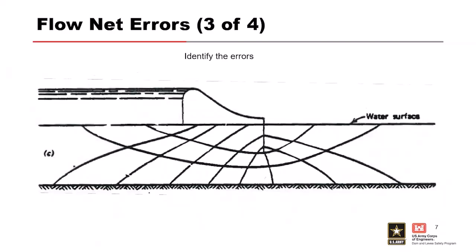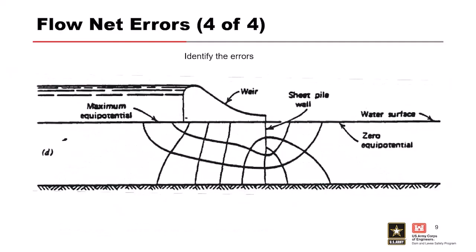How about this one? Assuming this is an isotropic soil media. The flow lines — they're not meeting at right angles. Yep, okay, thanks Lydia — that's exactly it. They're not meeting properly, so you're not going to get accurate results in your model. This last one's a bit of a trick question. There may be some small errors still in this one, but this is a much better representation of the flow net for this cross section — equipotential lines, the water surface, a sheet pile wall, a weir — probably a pretty reasonable initial sketch.